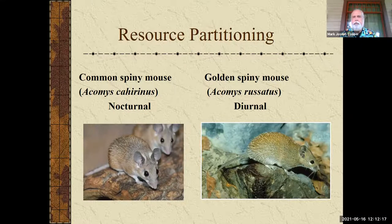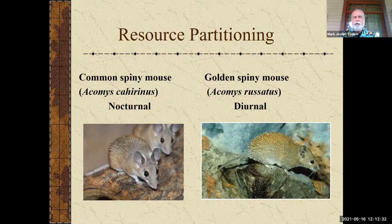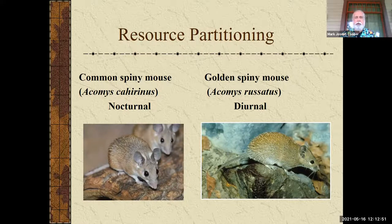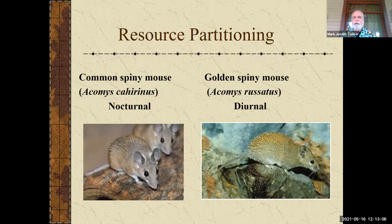Resource partitioning is not just spatial, it's also temporal — it has to do with time. Here we have two different spiny mice: the common one is nocturnal, and the golden spiny mouse is diurnal, out during the day. The resource partitioning means they're in the same habitat, one's out at night and one's out during the day. It turns out if you remove the nocturnal one, the golden spiny mice will go nocturnal — that is probably what their genetics tell them to be. But because of competition, they can't compete with the common one, and so they evolved to resource partition and use the daytime instead.